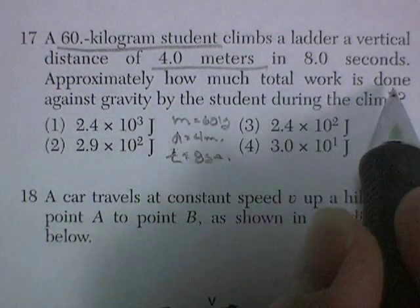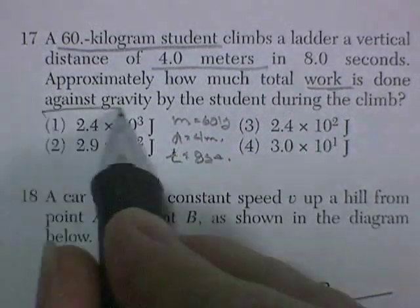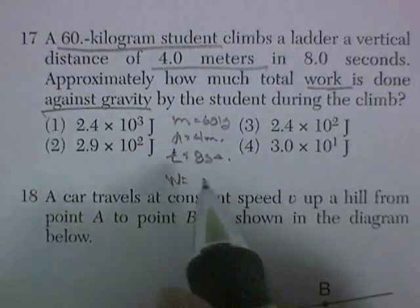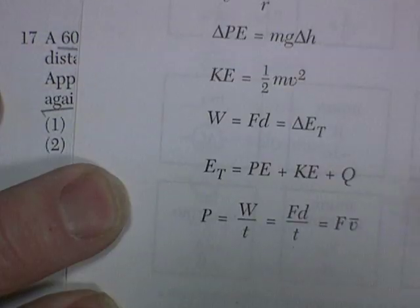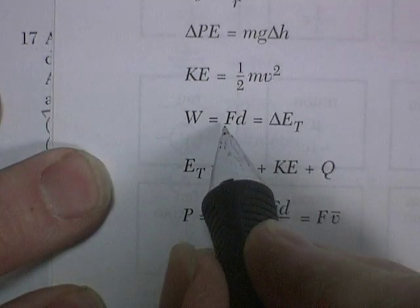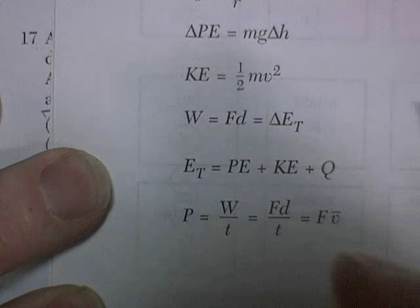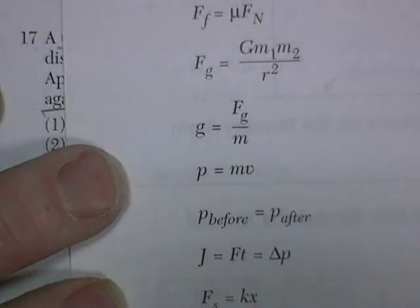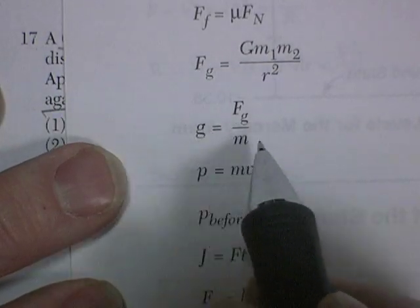Approximately how much total work is done against gravity. Now the key to this is that work is done against gravity. So the force he has to overcome is the force of gravity, which is mg, his weight.